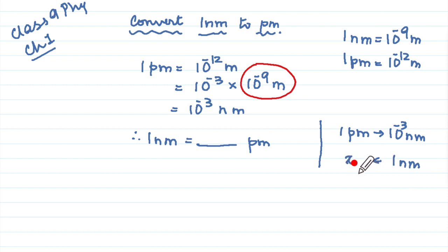And I am going to call this as x. Your x will be equal to cross multiply 1 into 1 upon 10 to the power minus 3 which will be 10 to the power 3 and that will give us 10 to the power 3 picometer.